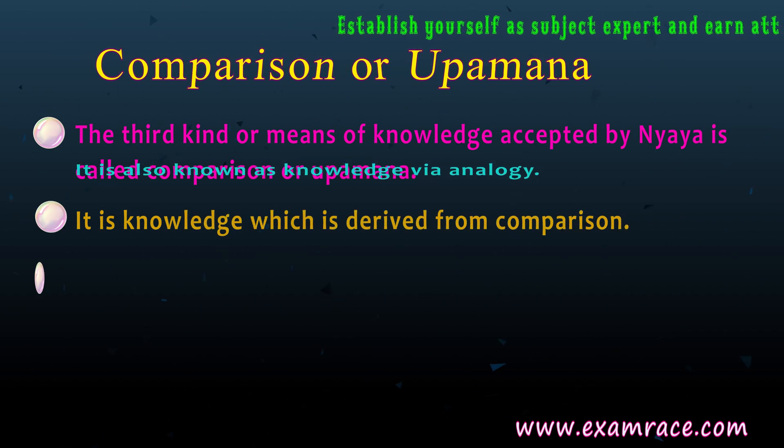Questions: 1. Knowledge produced by similarity and resemblance comes under — the correct answer is Upamana or comparison. 2. Dash is the knowledge of the relation of the name and the object or the thing denoted by that name — the correct answer is Upamana. 3. The two kinds of Shabda are — the correct answer is Vedika and Lokika. 4. Dash means mutual implication or expectancy — the correct answer is Akanksha.